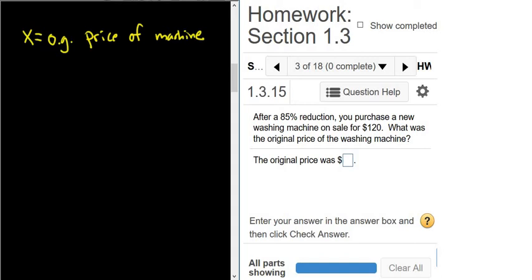So we know that the washing machine sold for $120. But we also know that it sold at an 85% price reduction. So that means it sells for the original price minus 85% of the original price.